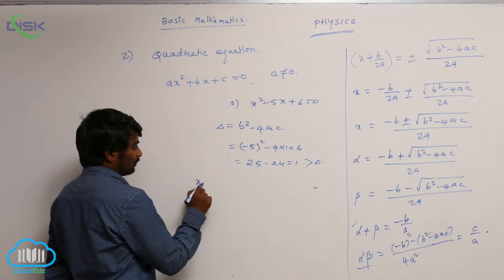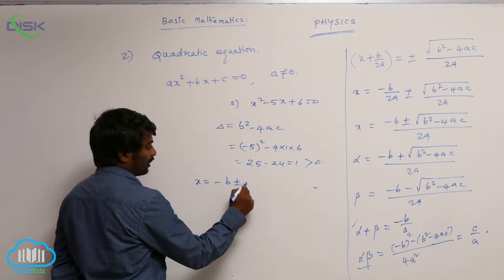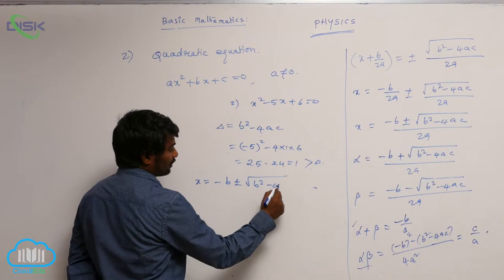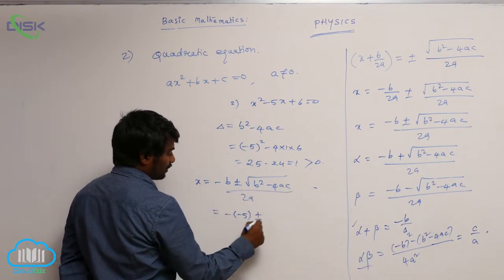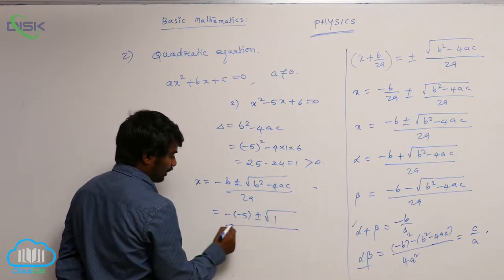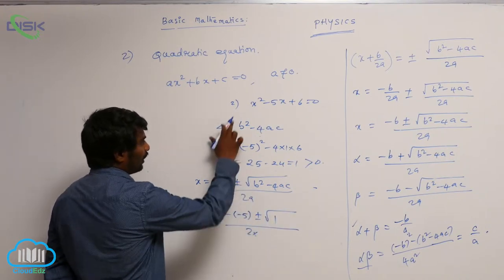So the roots are minus b plus or minus under root of b square minus 4ac by 2a. So minus of minus 5 plus or minus under root of 1 by 2 into a value is 1.